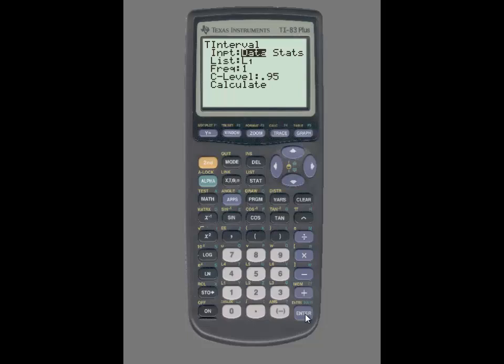Since I have the actual data, I want to make sure that Data is highlighted. My data was placed into L1. Frequency is always set to one, and my confidence level is 0.90. Next, I'm going to highlight Calculate and press Enter.